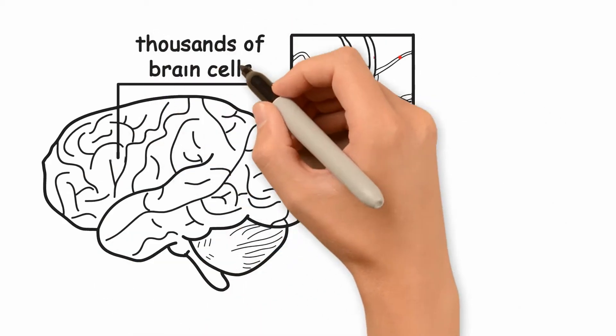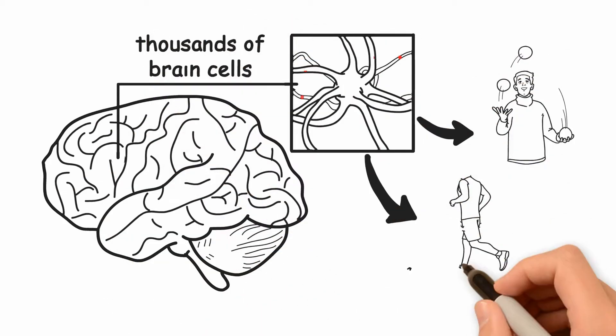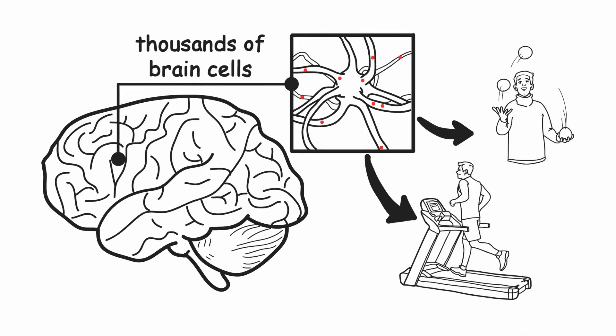Neural pathways are made up of thousands of brain cells that are organized for a specific purpose. They help us learn new behaviors and activities.